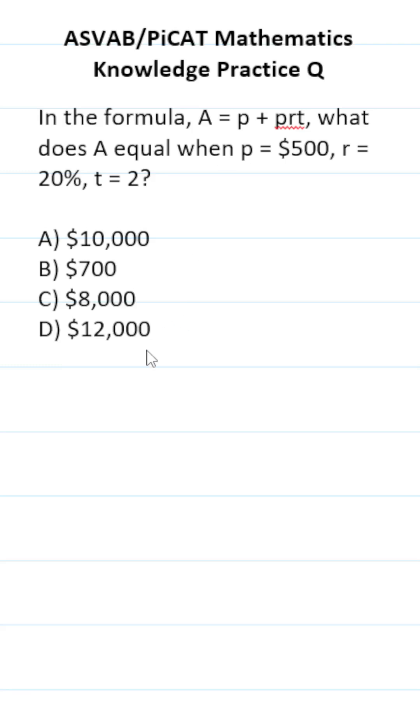This ASVAB PiCAT Math Knowledge Practice Test question says in the formula A equals P plus P times R times T, what does A equal when P equals 500, R equals 20 percent, and T equals 2?